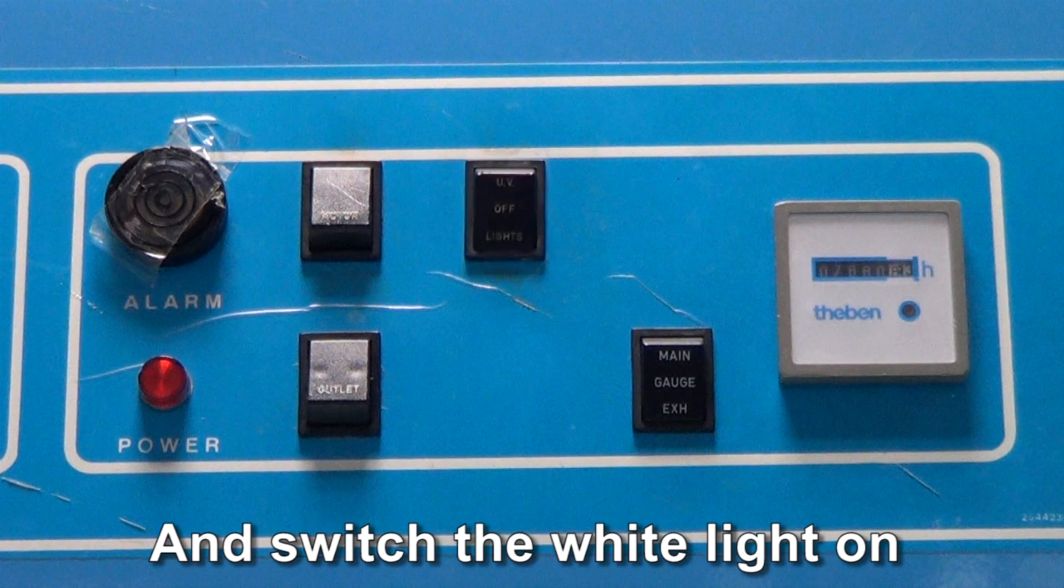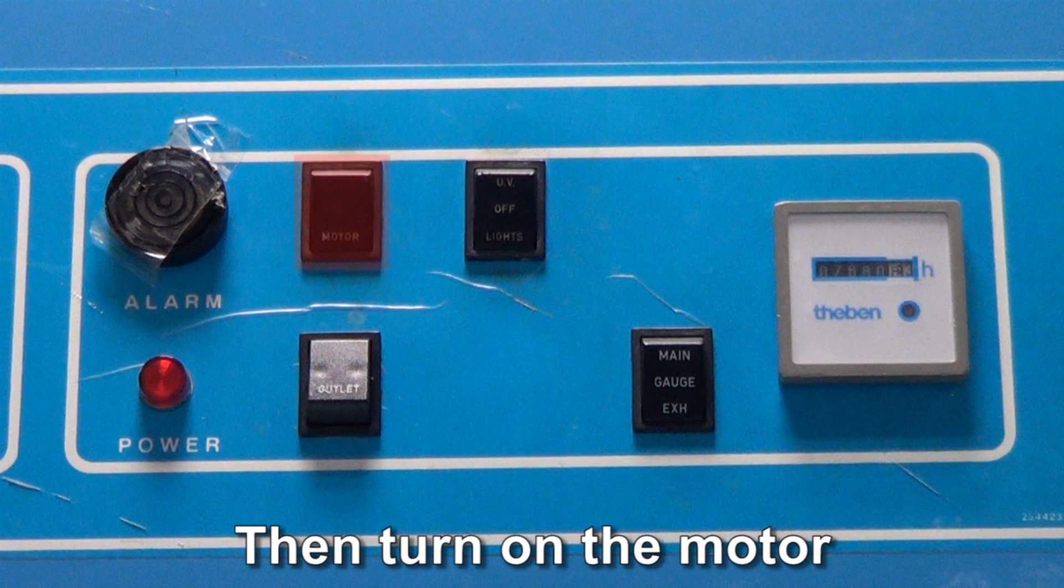Setting up a class 2 biosafety cabinet. Start by switching on the cabinet. Switch off the UV light, then turn the white light on and turn the motor on.